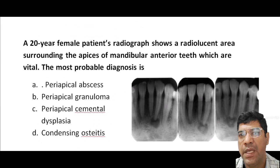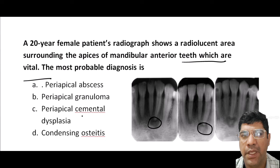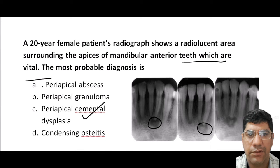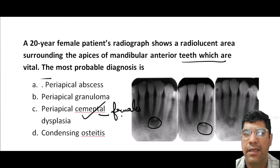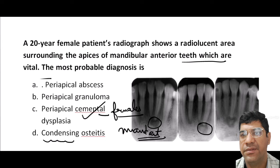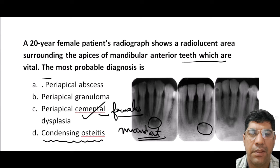A 20-year-old female patient's radiographs show a radiolucent area surrounding the apices of mandibular anterior teeth, all of which are vital. The answer is periapical cemento-osseous dysplasia. This condition is characterized by changes in the bone near the tooth apices leading to a radiolucent area; the involved teeth are vital, it is more common in females, and occurs in the mandibular anterior region. Condensing osteitis, by contrast, appears as a dense area around the tooth apices, not a radiolucent area.